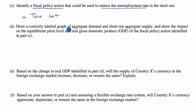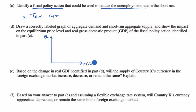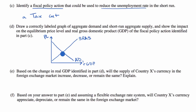Draw a correctly labeled graph of aggregate demand and short-run aggregate supply, and show the impact on the equilibrium price level and real GDP of the fiscal policy action from part C. So the vertical axis is the price level, the horizontal axis is real GDP. The short-run aggregate supply is upward sloping — as the price level increases, the economy outputs more. Then we draw aggregate demand as AD sub 1, with equilibrium output Y sub 1 and equilibrium price level PL sub 1.